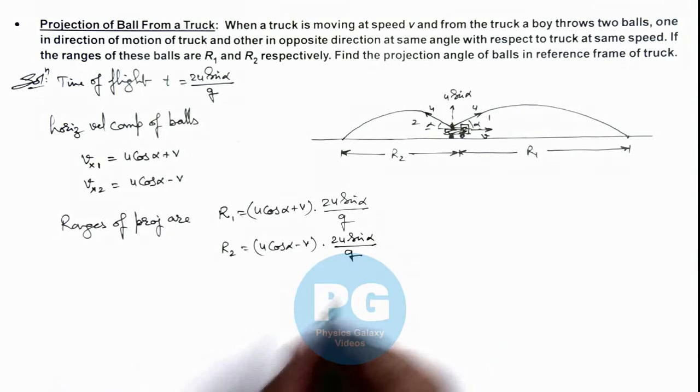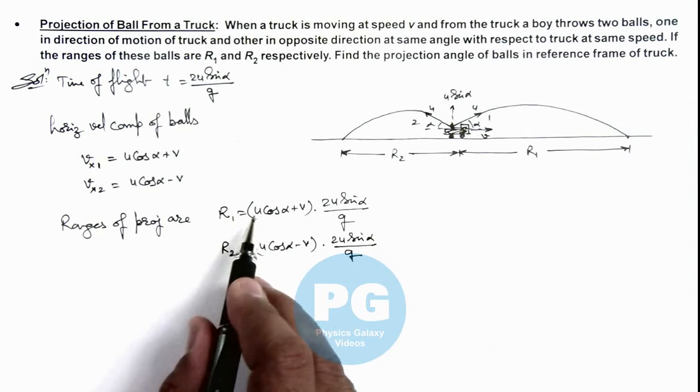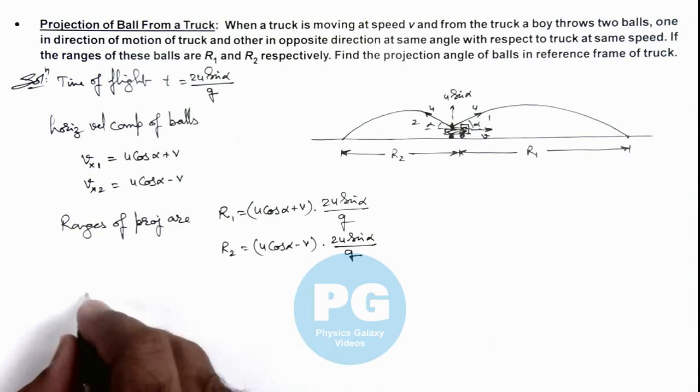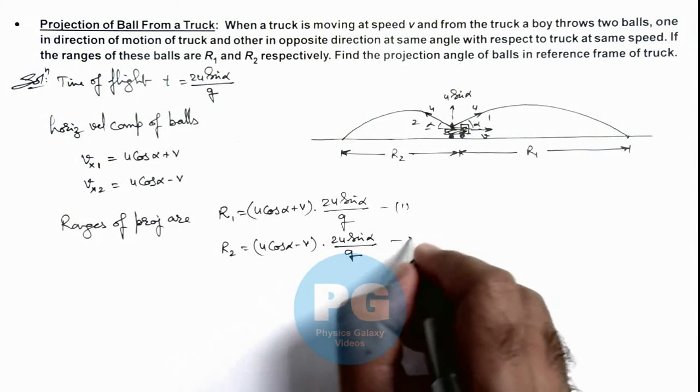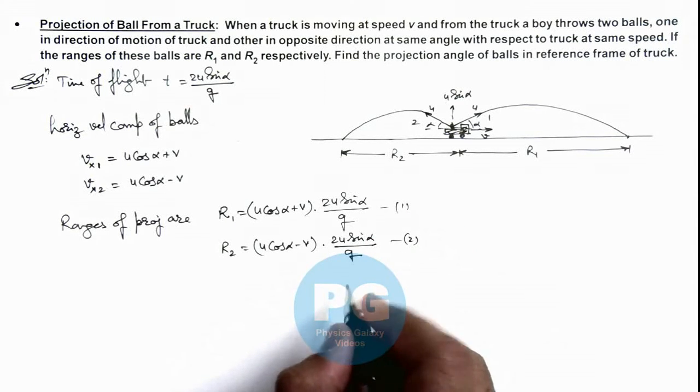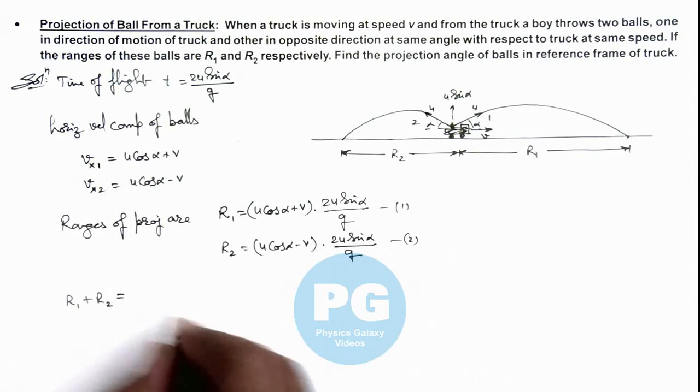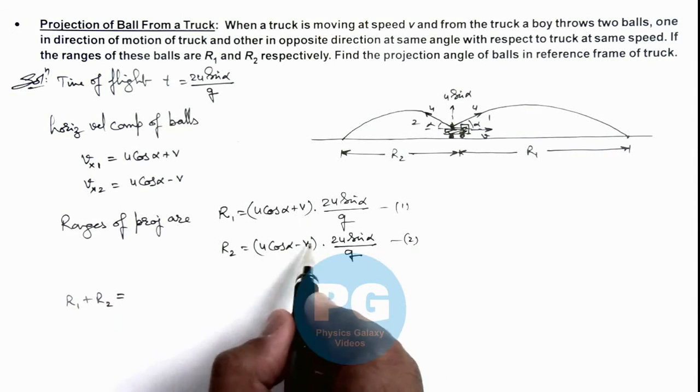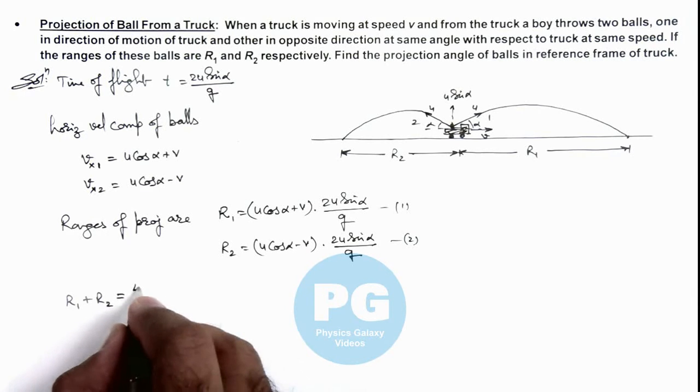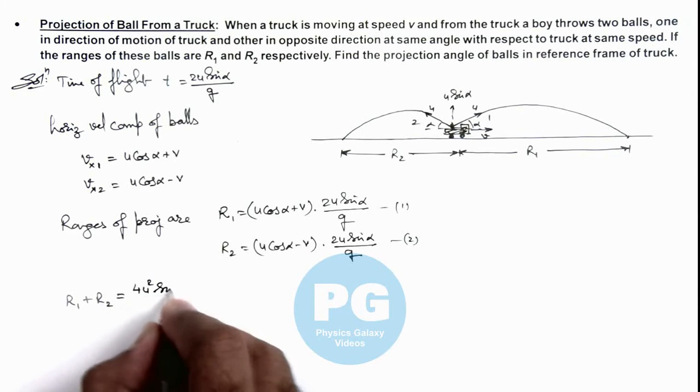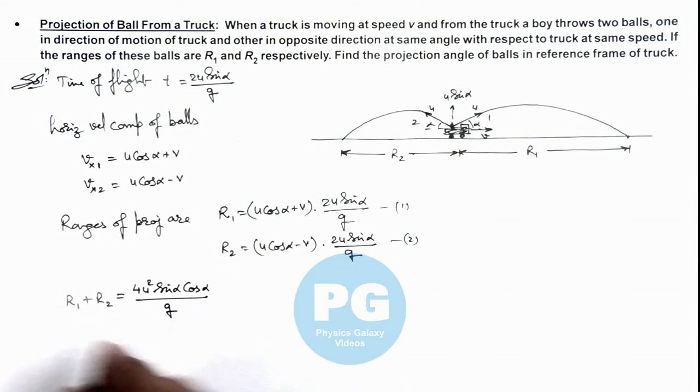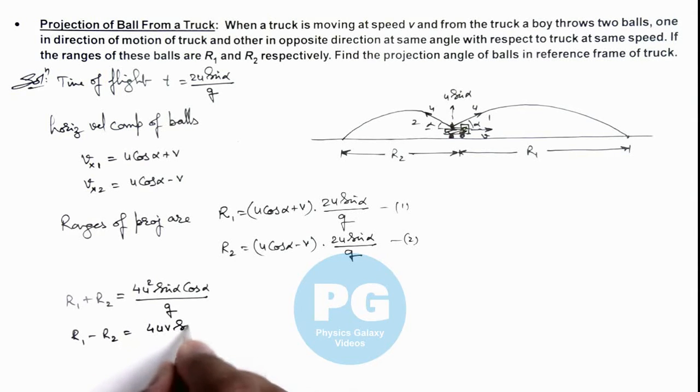Now as we are having the values r1 and r2, if we add and subtract the two, see what we are getting. If we add the two equations you can see r1 plus r2 will give us, v gets cancelled out and this gives us 4u squared sine alpha cos alpha by g. And if we subtract the two, the value of r1 minus r2 we are getting is 4uv sine alpha by g.